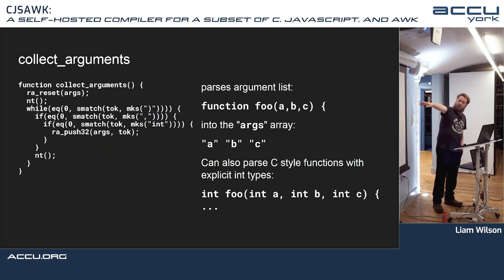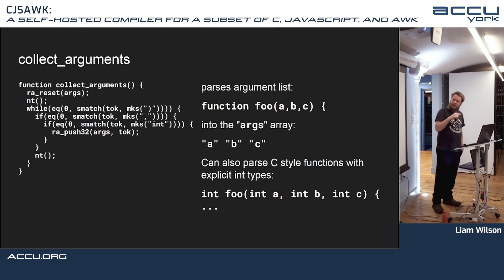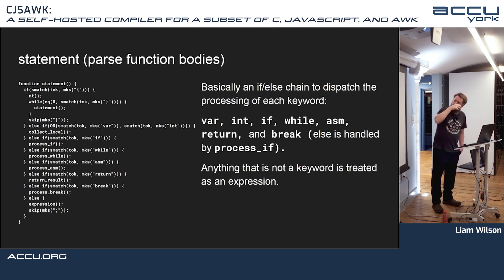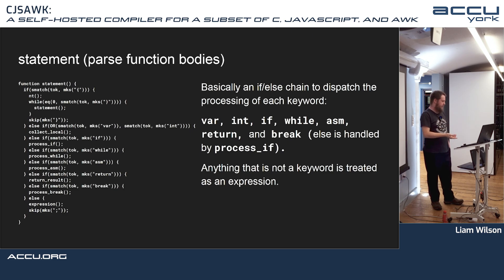Collect-arguments takes an argument list like 'function foo(a, b, c)' and essentially pushes the tokens into an array. The function consumes tokens until it encounters a close-paren; if it encounters a comma or an integer token, it skips them; anything else gets pushed into the arguments array. The main body — which parses function bodies — is an if-else chain that dispatches processing of each keyword available in the language. There aren't many keywords because it's a very cut-down dialect, and anything that's not a keyword is treated as an expression.